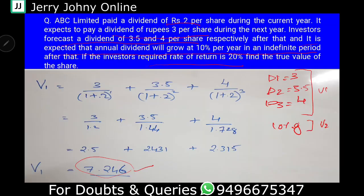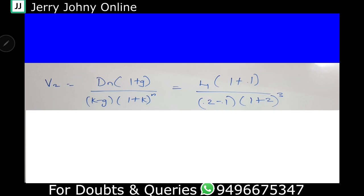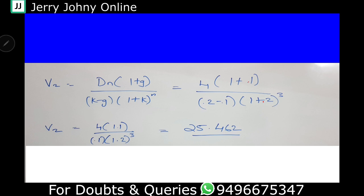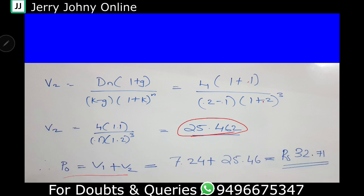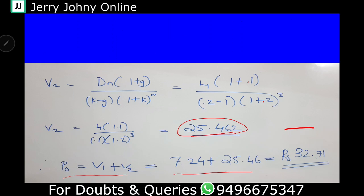Now for V2, we require Dn, which is D3 = 4. Using the formula: V2 = D3 × (1 + g) divided by (k minus g), multiplied by 1 divided by (1+k) raised to n. Substituting: 4 × (1 + 0.1) divided by (0.2 minus 0.1), multiplied by 1 divided by (1.2) raised to 3. That equals 25.462. So P0 = V1 + V2 = 7.246 + 25.462 = 32.71. The true value of the share is Rs. 32.71.